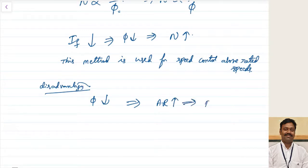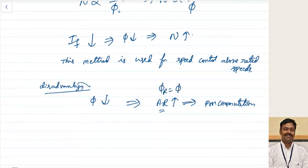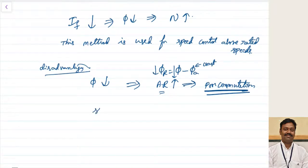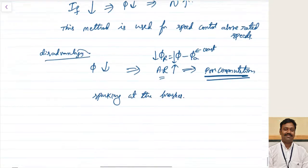This leads to poor commutation. The net resultant flux equals the main field flux minus the flux due to the armature. For a given load the armature flux is constant, so as the main field flux is decreased the resultant flux decreases, leading to poor commutation. Because of poor commutation, there will be sparking at the brushes. That is the only disadvantage of this technique.